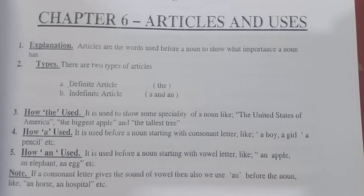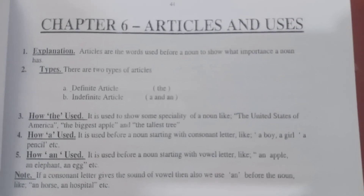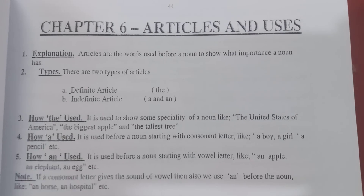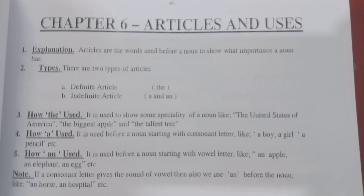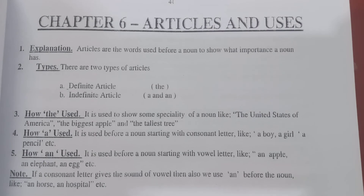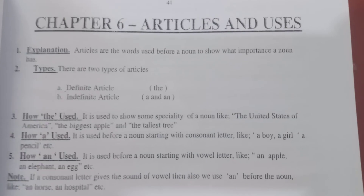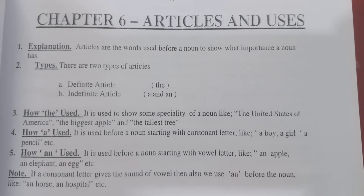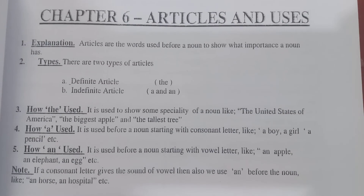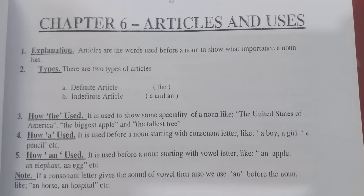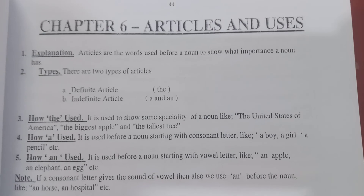So dear students, in this topic you have learned what articles are and how many types of articles there are. There are two types: the first is the definite article 'the,' and the second is the indefinite article, which includes 'a' and 'an.' I hope the topic of articles has been briefly explained. If you liked this video, please subscribe so that new videos can reach you easily. Allah hafiz.